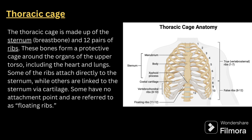Next comes the thoracic cage. The thoracic cage is made up of the sternum — the breastbone — and 12 pairs of ribs. These bones form a protective cage around the organs of the upper torso, including the heart and lungs. Some ribs attach directly to the sternum, while others are linked to the sternum via cartilage. Some have no attachment point and are referred to as floating ribs.